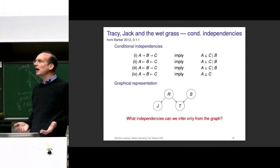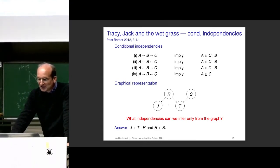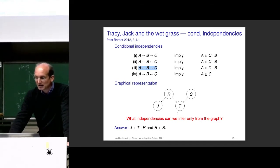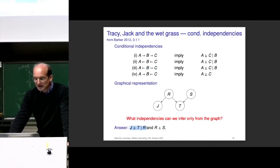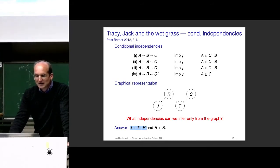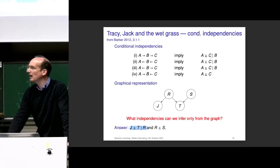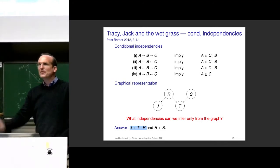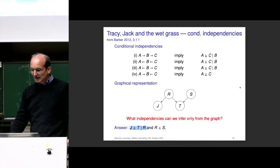What can we infer from the sprinkler graph using these tricks? J and T given R are independent because the path over those three nodes is the same as our A→B→C arrow — the arrows point in the same direction along J, R, T, so A is independent of C given B applies. We can also say R and S are independent — the fourth case, the V-structure, is somewhat special: in the other three cases no matter how the arrows go, we always have the outer nodes independent given the middle node. Here, even without observing anything, they are already independent.